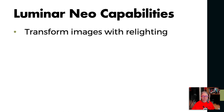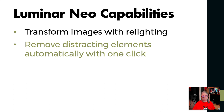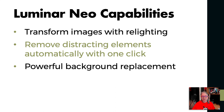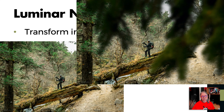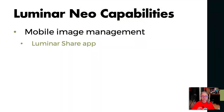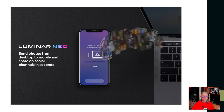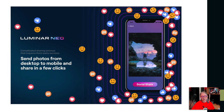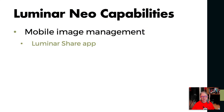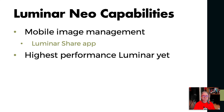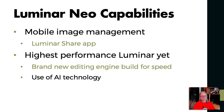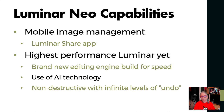You can transform your images with relighting and remove stubborn objects like dust spots and power lines with a single click. You'll be able to do background replacement on portraits in future iterations, and use layers and overlays to make composite images. The new Luminar Share app lets you take images quickly from Luminar Neo on your desktop to your phone and immediately upload to social media. Luminar Neo will be the best-performing, fastest Luminar in the family — built for speed from the ground up, still using AI technology but in a way that won't slow down the app. It will also include non-destructive editing with infinite levels of undo.